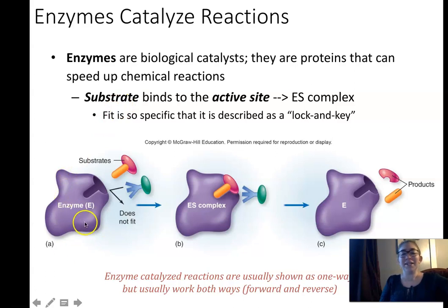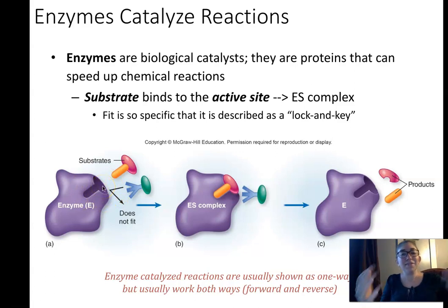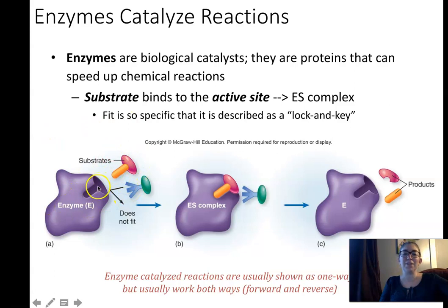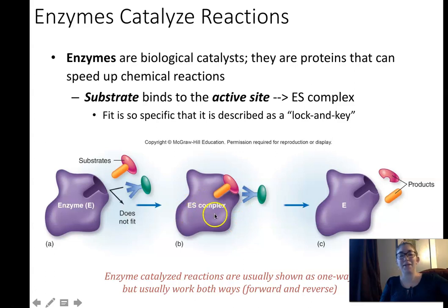Different enzymes have different substrates — they're specific for certain substrates. The spot on the enzyme where substrates bind is called the active site, because that's where the activity of catalysis occurs. When substrates bind to the enzyme, we collectively refer to that as the enzyme-substrate complex, or the ES complex.